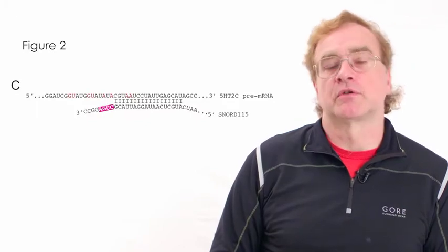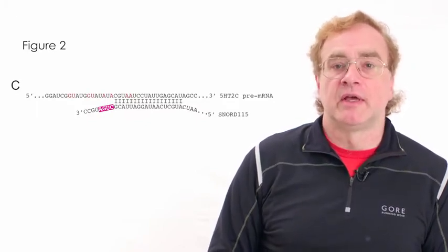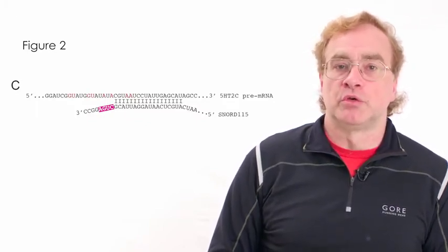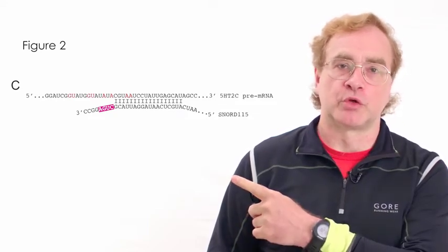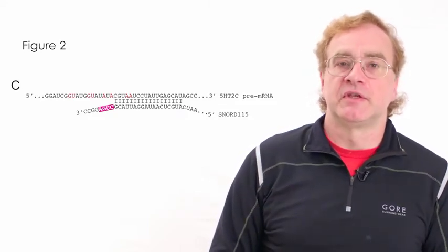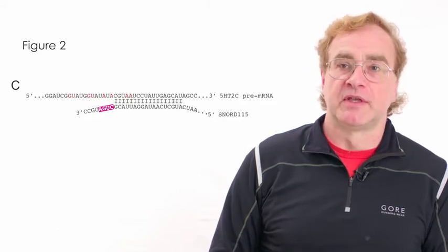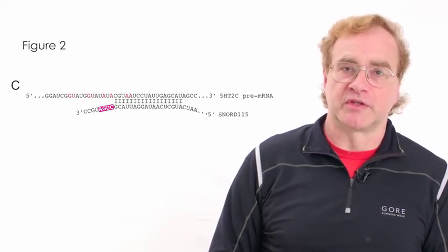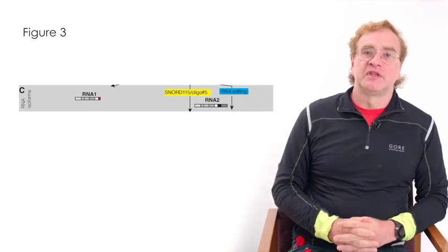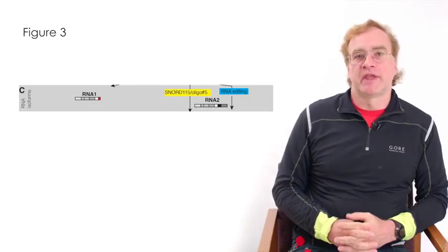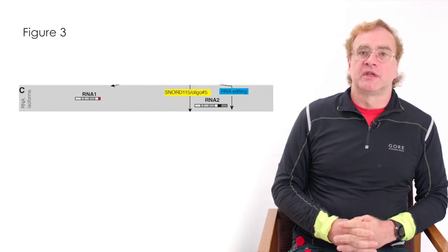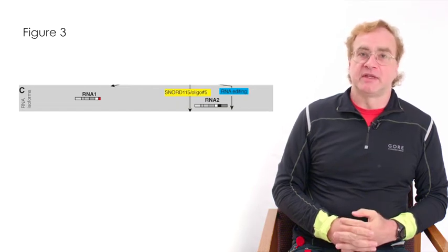One of these snoRNAs, called SNORD115, has been shown to show sequence complementarity to the serotonin receptor 2C. And this sequence complementarity changes alternative splicing of the serotonin receptor 2C. The serotonin receptor 2C is a neuron-specific receptor in the brain that controls appetite and satiety in the hypothalamus.